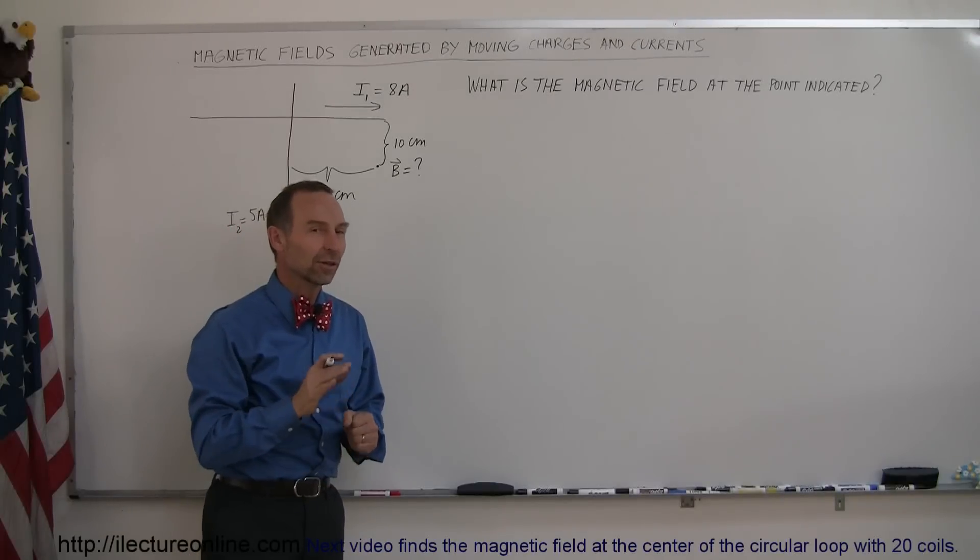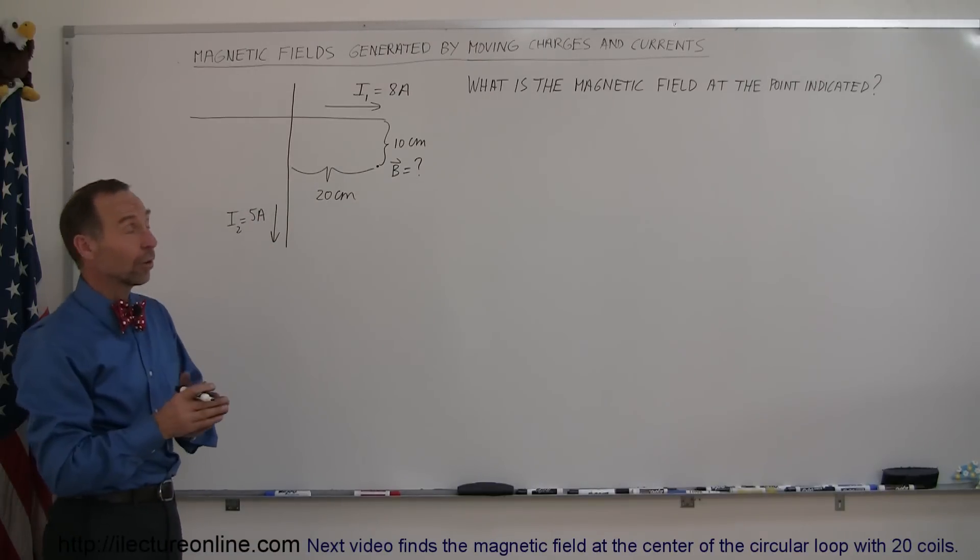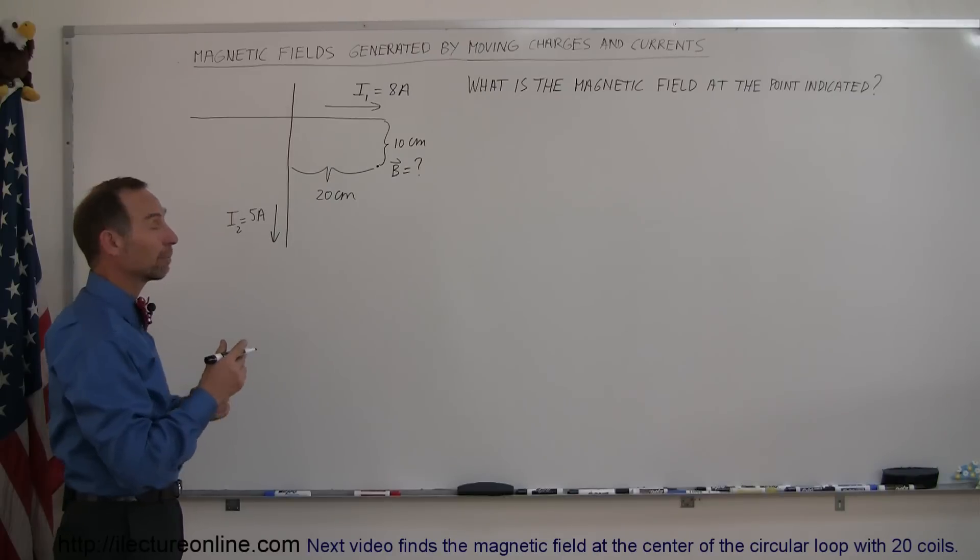Welcome to our lecture online and here's another example of how to find the magnetic field near the presence of two current carrying wires. In this case though, the two wires are not running parallel to one another, they're running perpendicular to one another.